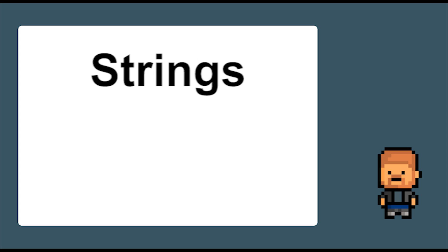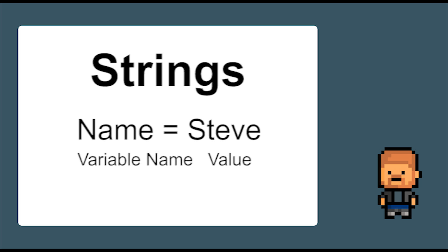We can also use variables to store names of things by using what is called strings. Imagine we are playing a game and it asks us to input our name and we answer 'Steve'. The variable could be called 'name' and the value could be 'Steve'.